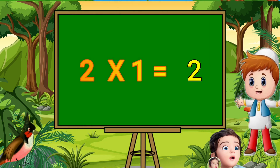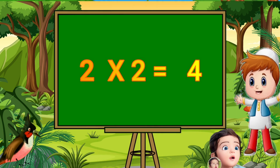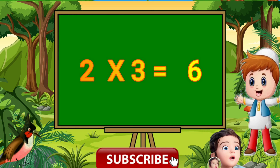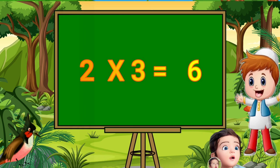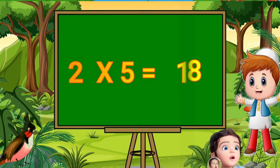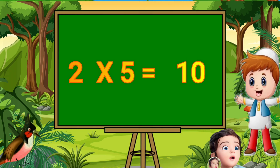Two ones are two. Two twos are four. Two threes are six. Two fours are eight. Two fives are ten.